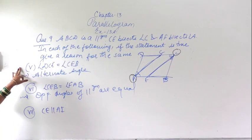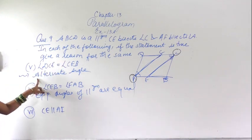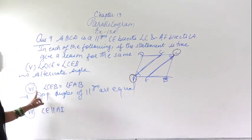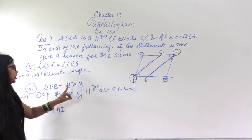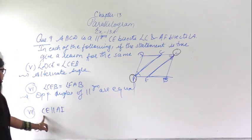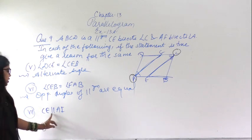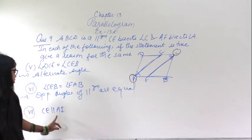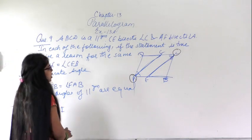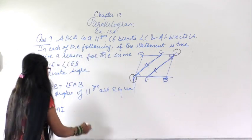In part 5, angle DCE equals angle CBE because these are alternate angles. In part 6, angle CEB equals angle FAB because the opposite angles of a parallelogram are equal. These statements are true.